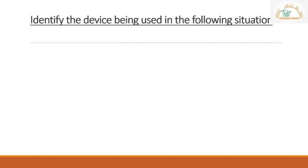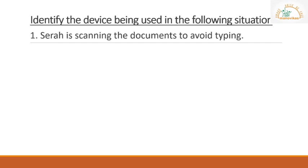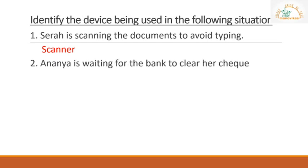You have to identify the device being used in the different situations given below. The first one: Sarah is scanning the document to avoid typing. Which device is she using? The answer is scanner. Second question: Ananya is waiting for the bank to clear her check. Which device is probably used to do that? The answer is MICR.